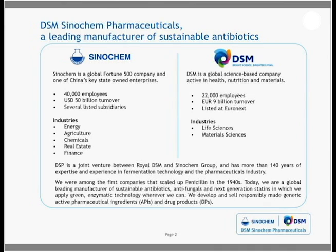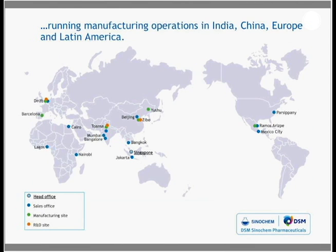Most participants in this webinar may wonder: DSM Sinechem Pharmaceuticals — what company is that? We were among the first companies to scale up penicillin in the 1940s. Today we are among the largest manufacturers of sustainable antibiotics and some other compounds, applying green enzymatic technology wherever we can. We operate factories in India, China, Mexico, and Europe — all run according to three basic requirements that we consider necessary to make antibiotics responsibly.